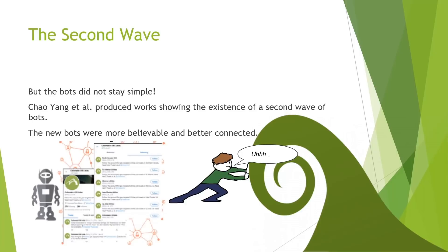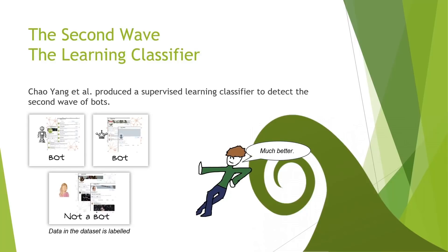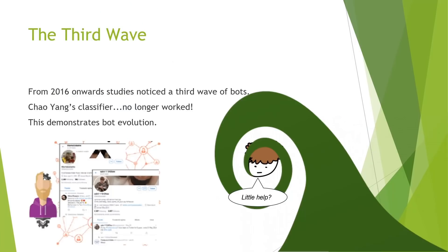Bots did not stay the same. Chow Yang et al. produced work showing the existence of a second wave of bots — more believable and better connected. To detect them, Chow Yang et al. also produced a supervised learning classifier. Unfortunately, from 2016 onwards, studies noticed a third wave of bots, and Chow Yang's classifier no longer worked. This demonstrates bot evolution, as the classifier created for the second wave was itself superseded.